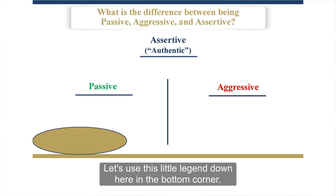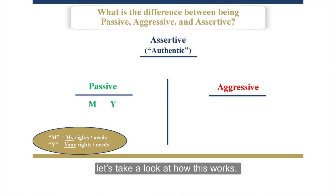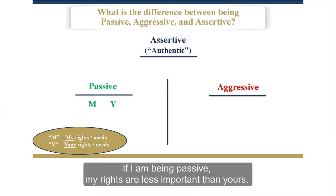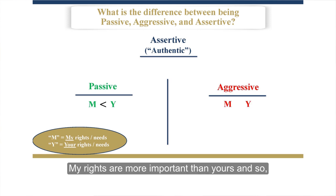Let's use this little legend down here in the bottom corner. If M equals my rights and needs, and Y equals your rights and needs, let's take a look at how this works together. If I am being passive, my rights are less important than yours — I am subordinating my rights to yours. If I'm being aggressive, it's just the opposite: my rights are more important than yours, and so I am asserting myself over you.